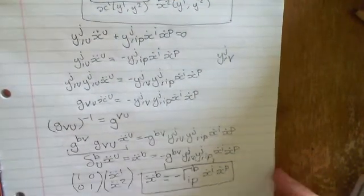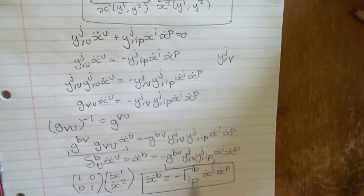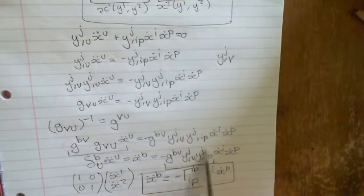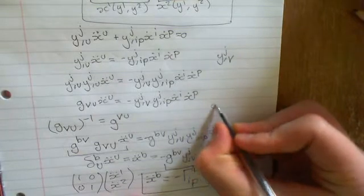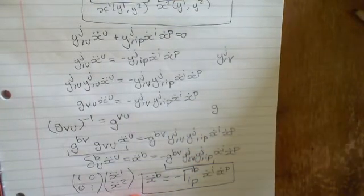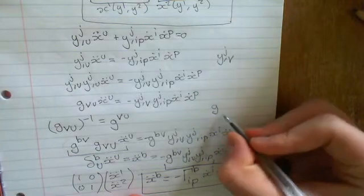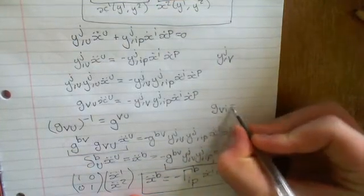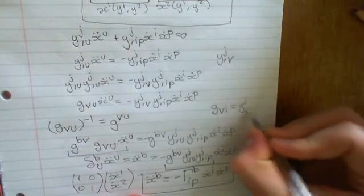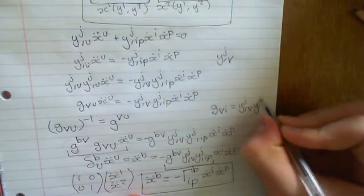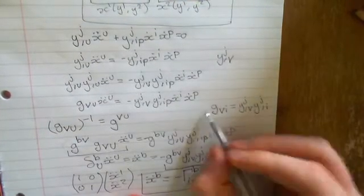Now, I will probably make my own video explaining how you derive this from the metric. You probably can work it out for yourself using the fact that the metric tensor g_vi is equal to y_j,v y_j,i.